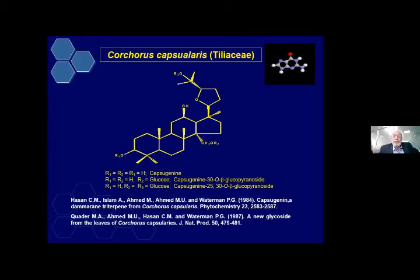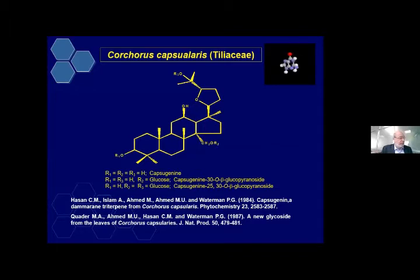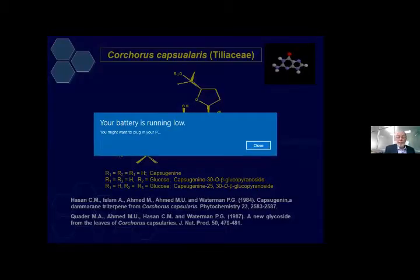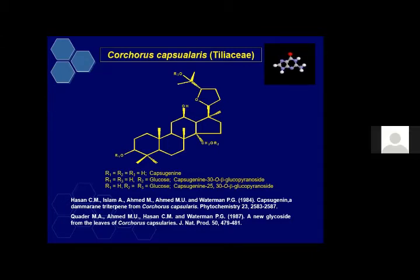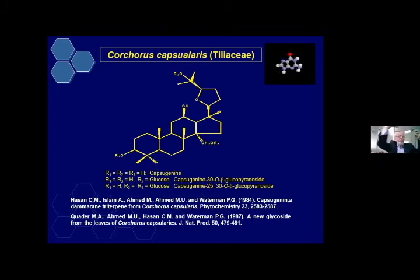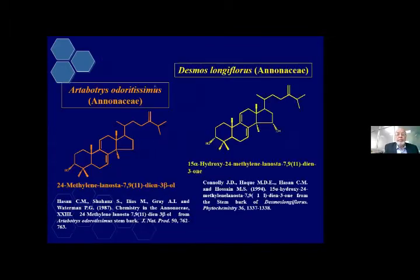I am now showing very quickly the different types of compounds. You can see steroid compounds — the steroid nucleus — but this is triterpenes. This is isolated from Corchorus capsularis, which is a jute plant. There are two types of jute. We isolated three new compounds from this and published in Phytochemistry, as you can see in the references in the Journal of Natural Products.